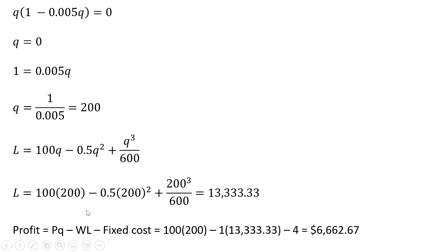In terms of profit, plugging all known values into the profit function: the price is $100, the firm produces 200 units, and it hires a little over 13,000 workers. Multiplying wage times the number of workers and subtracting out the fixed cost of $4, we get the firm's total profit. And that's it.